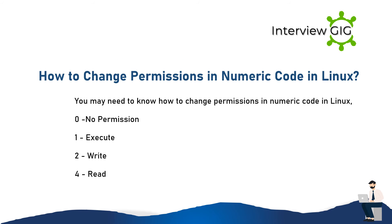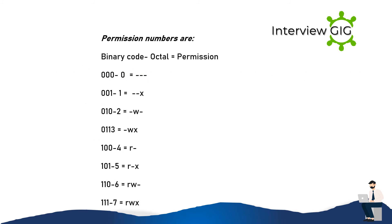How to change permissions using numeric code in Linux? 0 = no permission. 1 = execute. 2 = write. 4 = read. Permission numbers are binary-coded octal values that equal specific permission combinations.